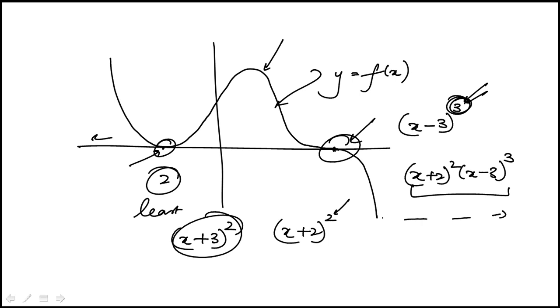So we know that it will have the least possible degree is 5. So the answer is D.